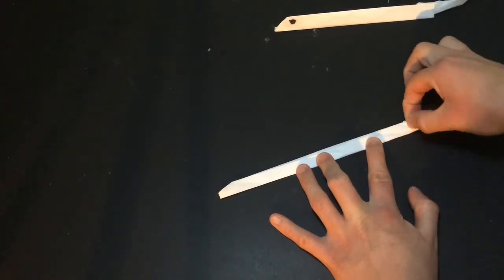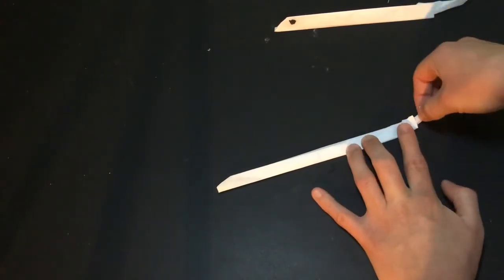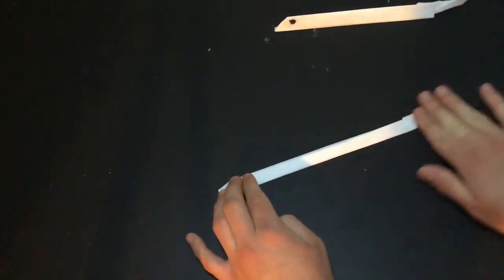And then especially towards the end you want to make sure the tail is nice and flattened out. And you can kind of pull it out a little bit and flatten it out.